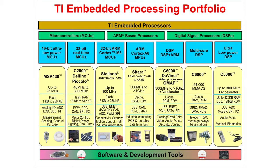Texas Instruments' Processing Portfolio covers a wide range of embedded processors, from microcontrollers, to ARM-based processors, to digital signal processors. Our microcontrollers include the 16-bit ultra-low power MSP430 microcontroller family and the 32-bit real-time C2000 microcontroller family. Our ARM-based processors include the 32-bit ARM Cortex-M3 Stellaris microcontroller family, the ARM Cortex-A8 Sitara microprocessor family, and OMAP devices which incorporate a C6000 and ARM processor. Our digital signal processors include the C6000 da Vinci as well as multi-core DSPs with up to 24 billion multiply accumulates per second. Additionally, there is an ultra-low power C5000 digital signal processor family.